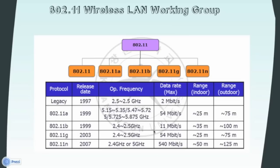While 802.11b was in development, IEEE created an extension to the original 802.11, which is much faster than 802.11b, commonly known as 802.11a. 802.11a supports a bandwidth of 54 Mbps and has a frequency spectrum around 5 GHz. Due to higher cost, 802.11a is used only in business networks, whereas 802.11b better serves home networks.